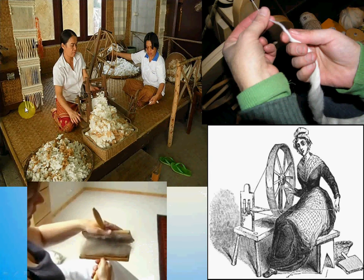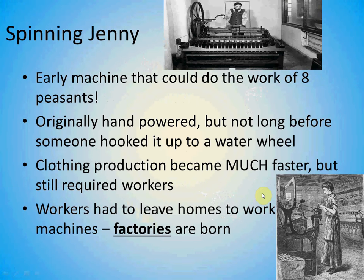How much are these ladies making doing it the traditional way, by hand? They're making one spindle at a time. Well, now we have a machine that can do the work of eight peasants at one time. All you need is one person to turn a crank to move the machine, and other people would just continually feed the raw material into it.